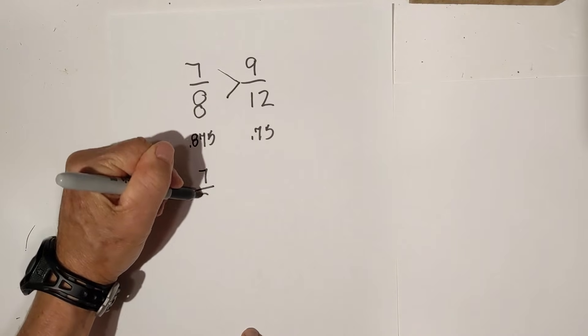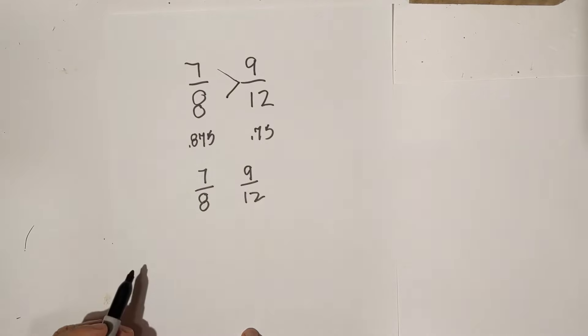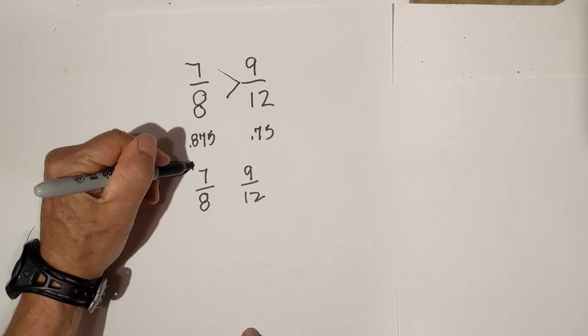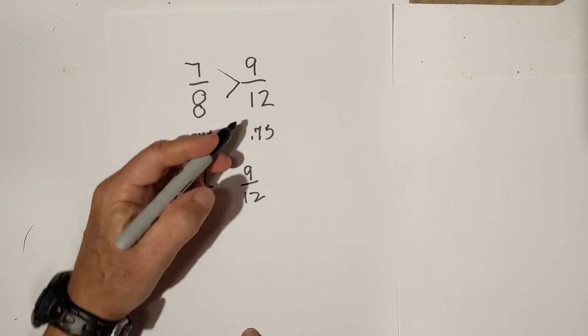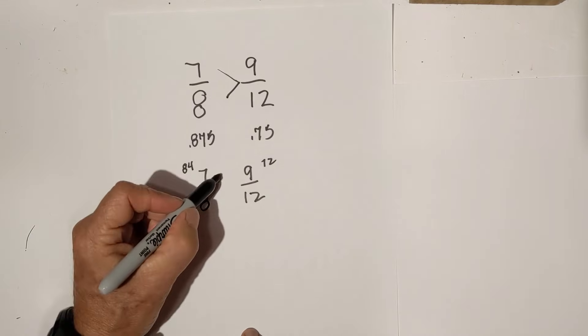Let's cross multiply. Or, remember, the butterfly technique. 12 times 7 is 84. 8 times 9 is 72. 84 larger than 72.